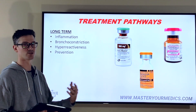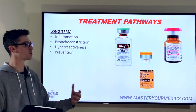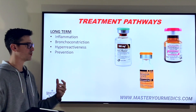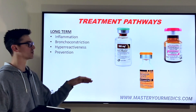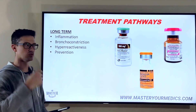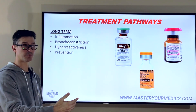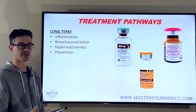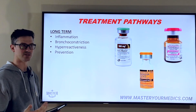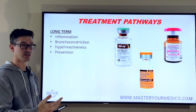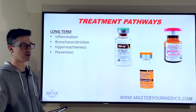Once we've gone through the quick-stabilization phase with beta-agonists and other short-term interventions — which have quick onset but shorter duration of action — we move to long-term goals. Corticosteroids have a slower onset of action, so we get those started while the beta-2 agonists are still working.